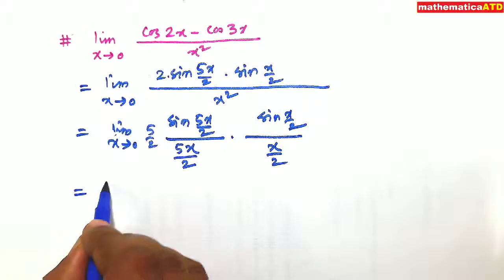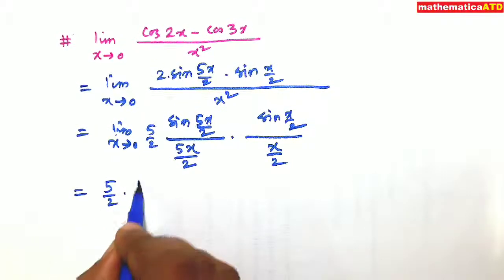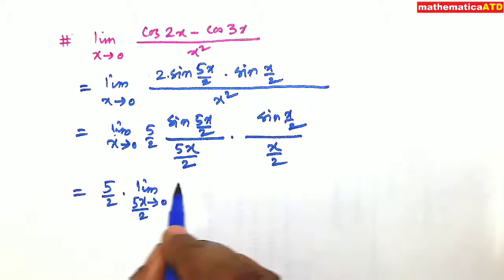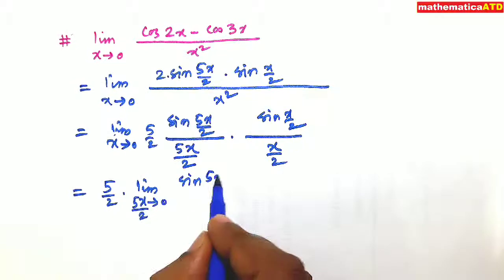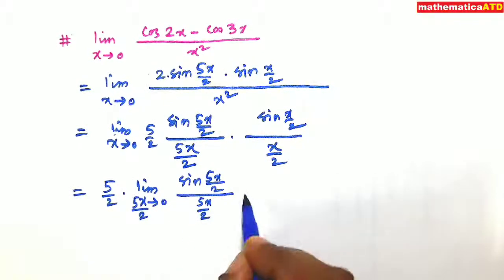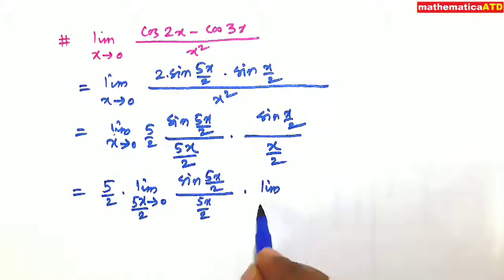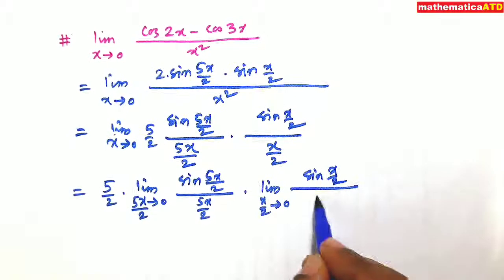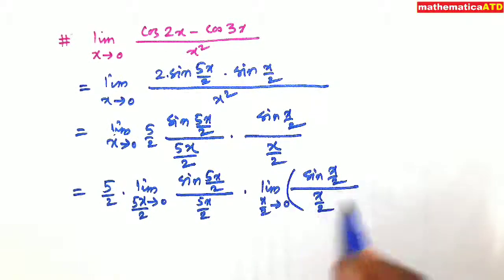So I arrange them 5 upon 2 into limit x tends to 0. x tends to 0, then obviously 5x upon 2 will tend to 0. So sin of 5x upon 2 divided by 5x upon 2, into limit x upon 2 tends to 0, sin of x upon 2 divided by x upon 2.